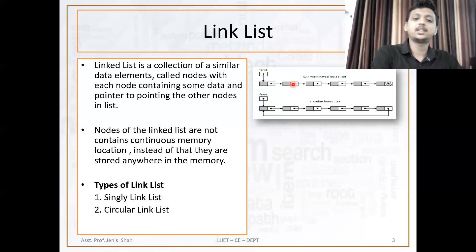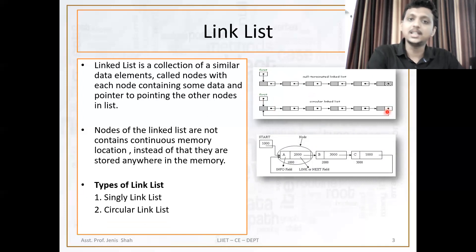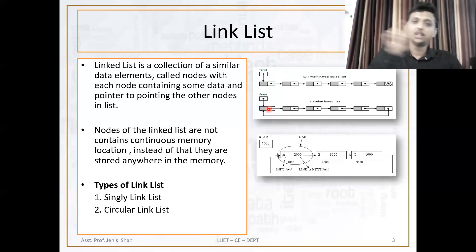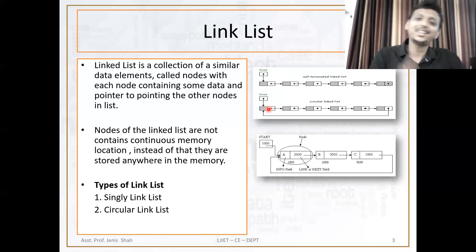Another example is a circular linked list. It is a linked list where the last node of the linked list points to the first node of the linked list — same like a circular queue. This is the last node pointing to the first node of the linked list. So that linked list is known as a circular linked list.